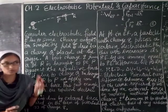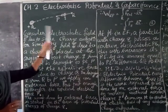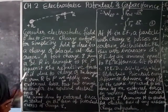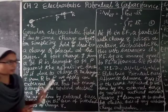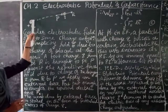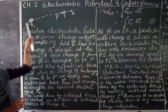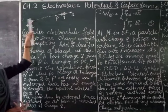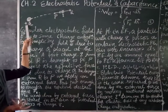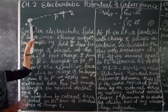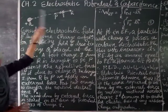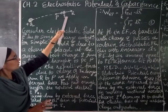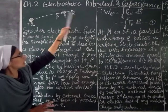Now we are going to start: what do we mean by potential energy and potential at a point. Consider a positive charge Q — you can take negative also, but for simplicity we have taken a positive charge Q — and we are going to bring another positive charge Q from point R to point P.